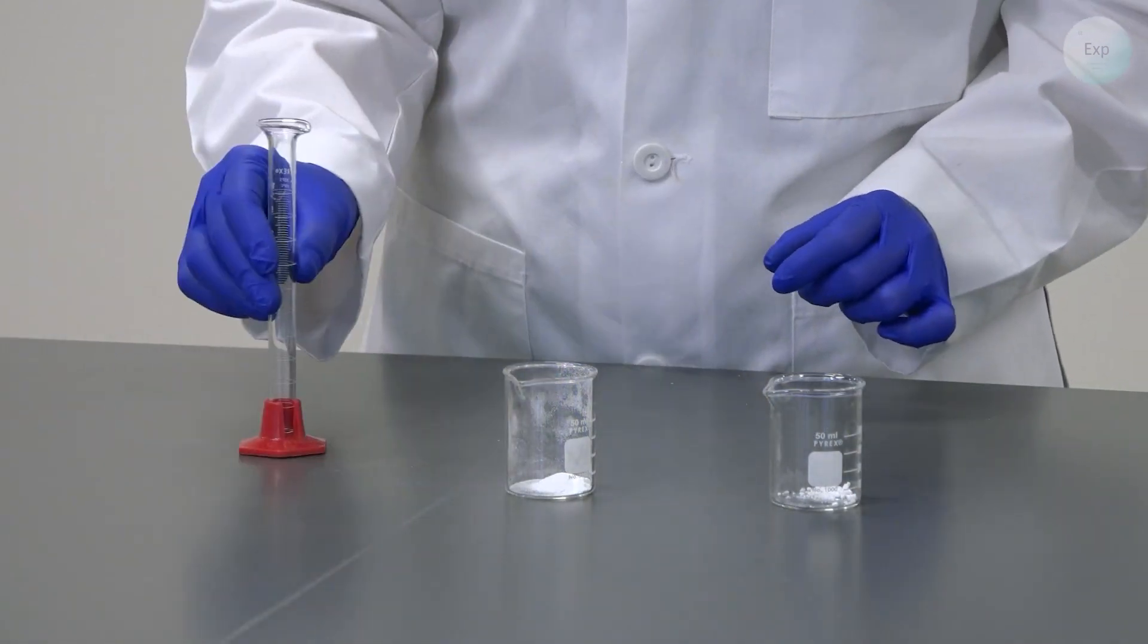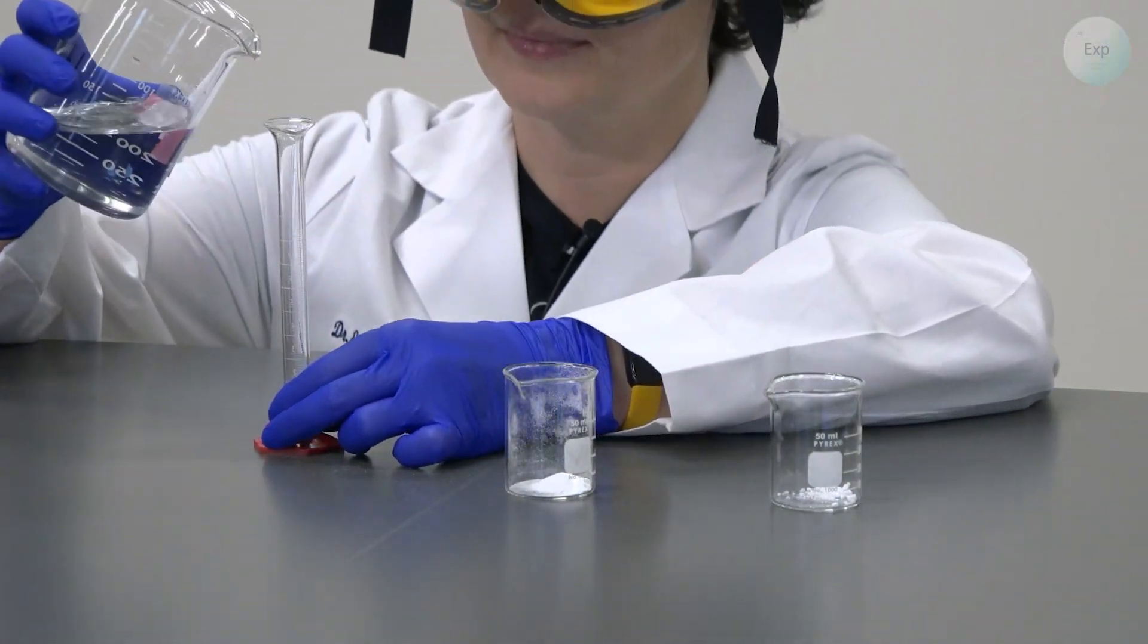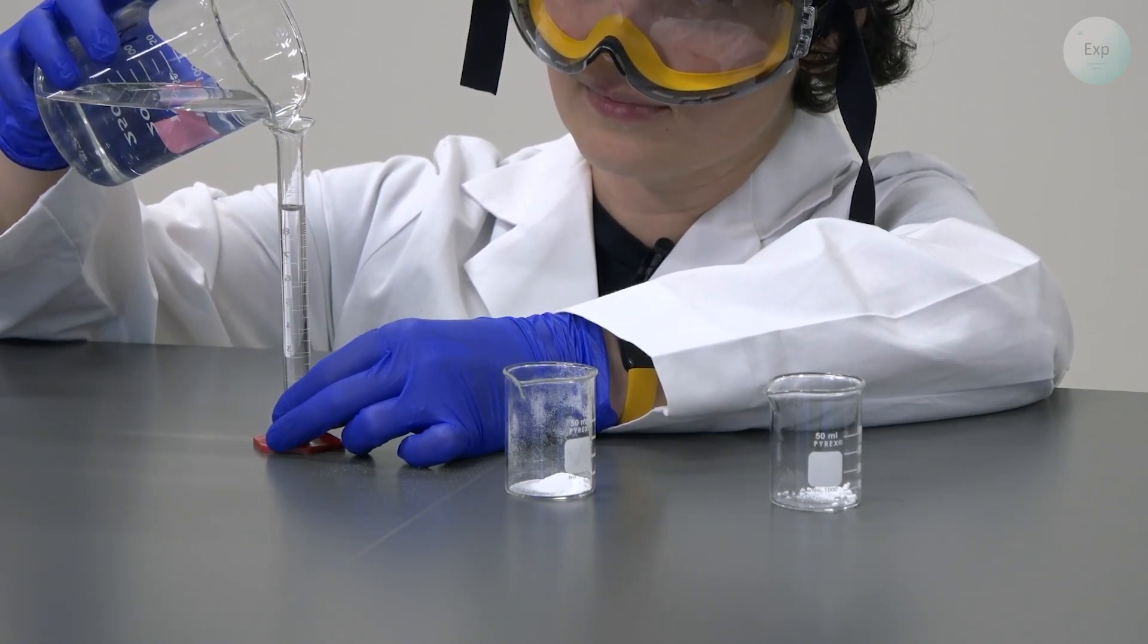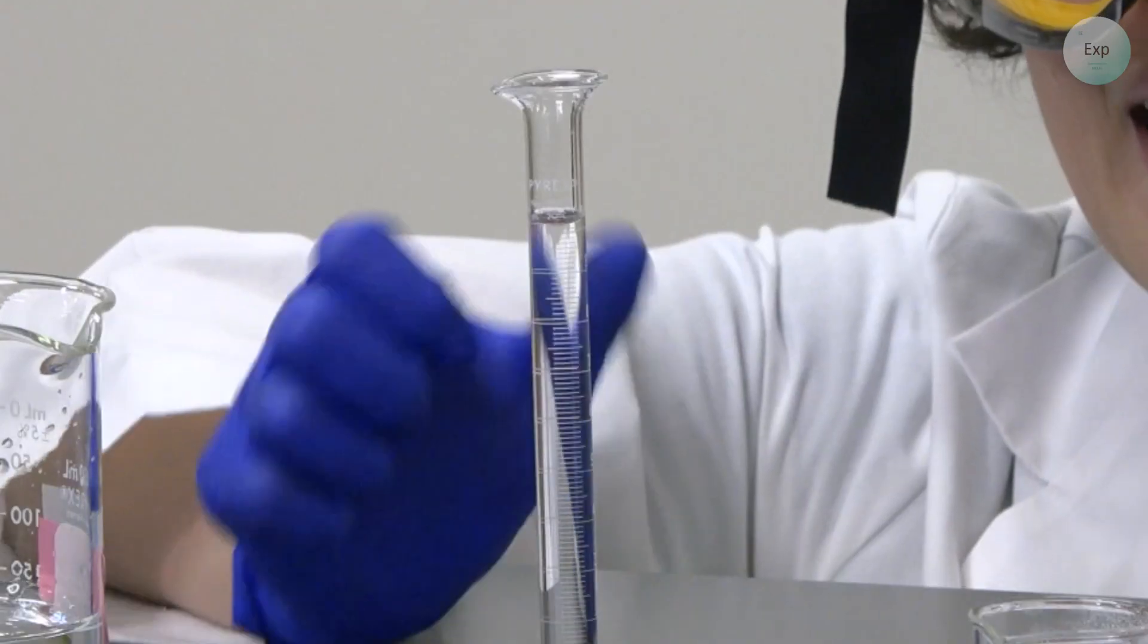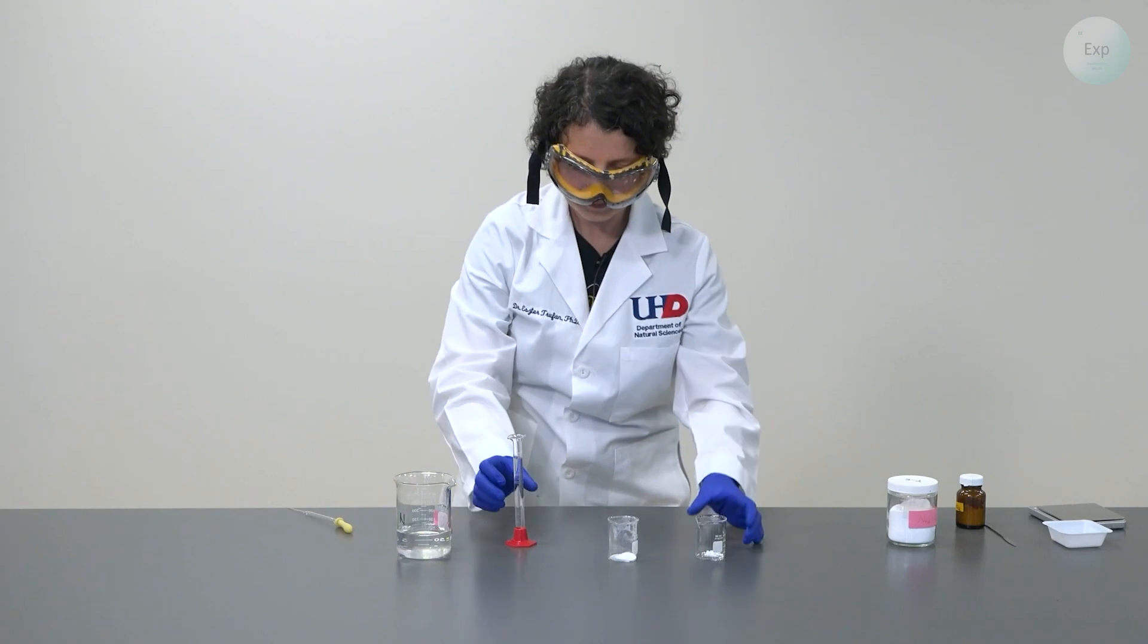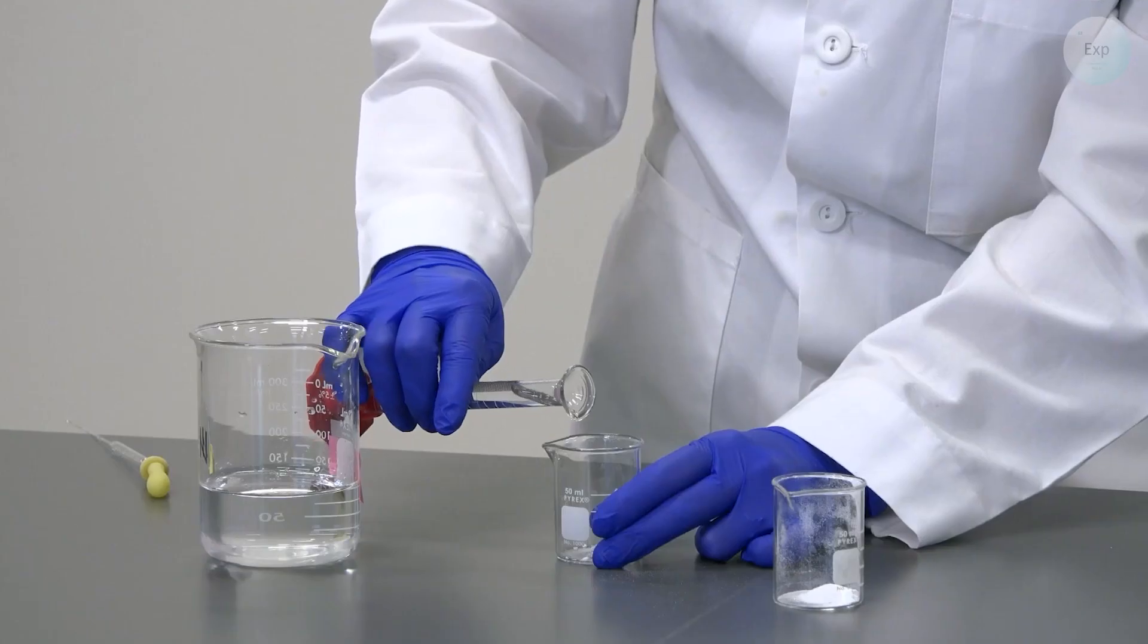Next, I will add 10 milliliters of deionized water into the graduated cylinder. For my first measurement, I have 9.98 milliliters of water and I will pour it on top of the calcium chloride.